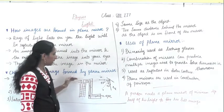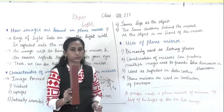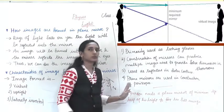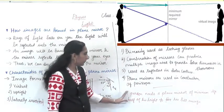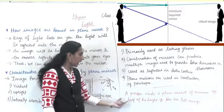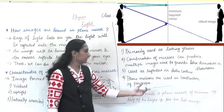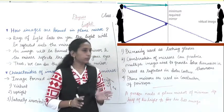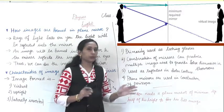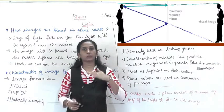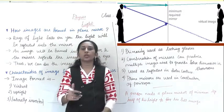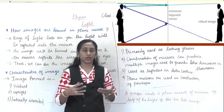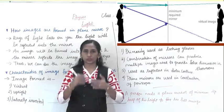This is how you can see through the periscope. One important thing you should know generally: a person needs a plane mirror of minimum half of his height to see his full image. If you want to see your full image in the mirror, the mirror should be at minimum half of your size. If the mirror is less than half your height, you cannot see your whole image.